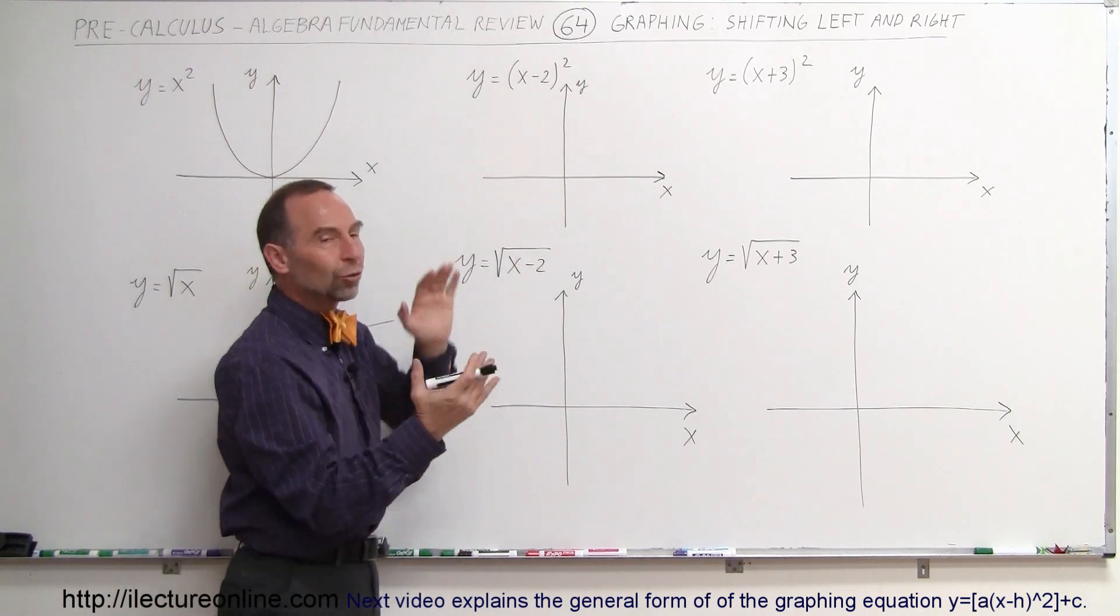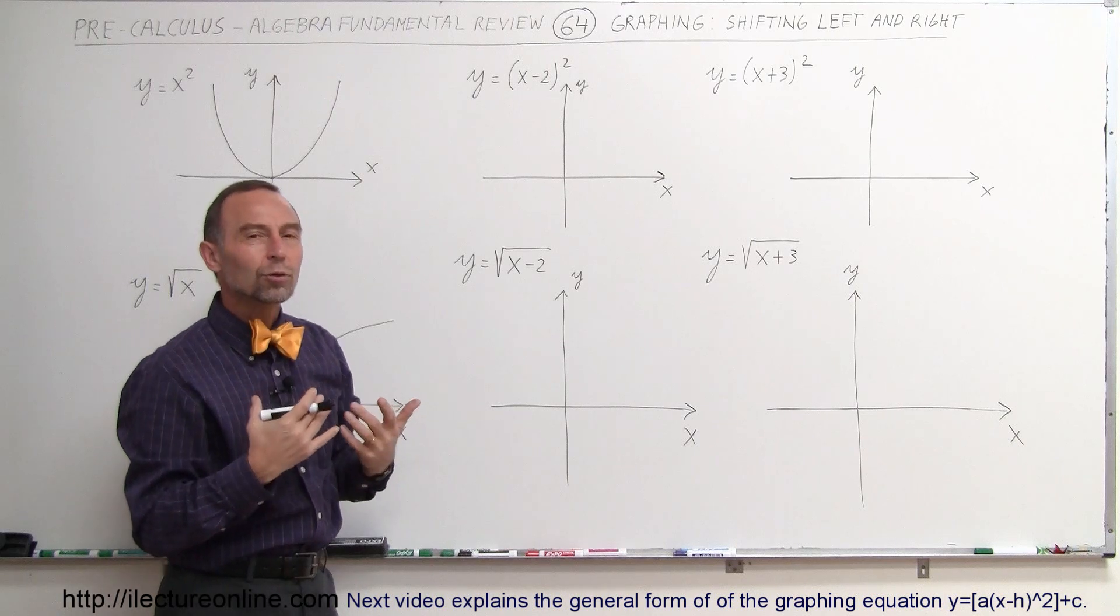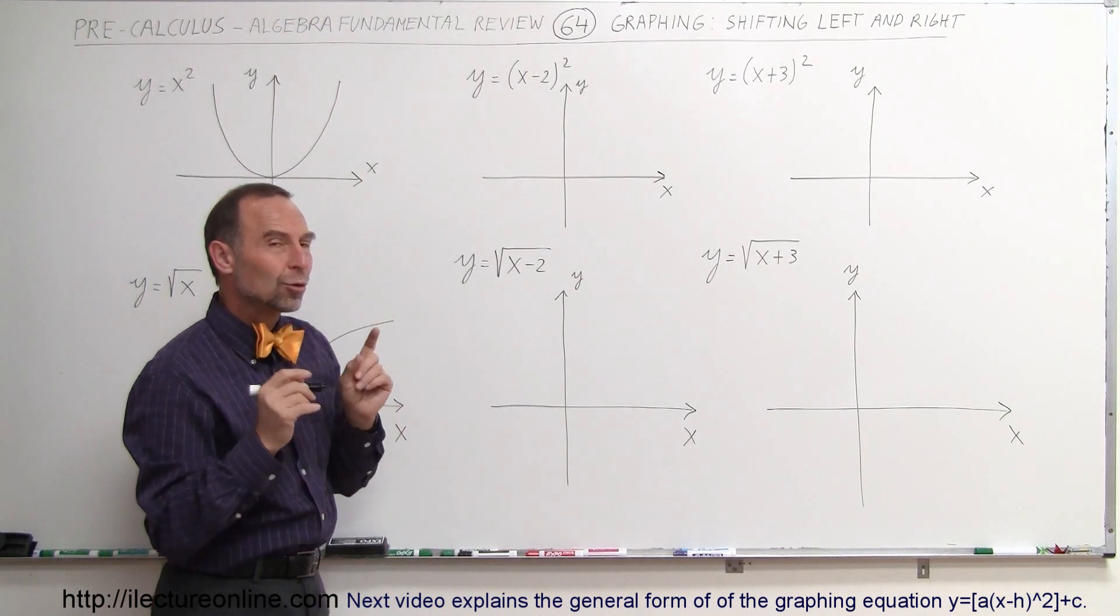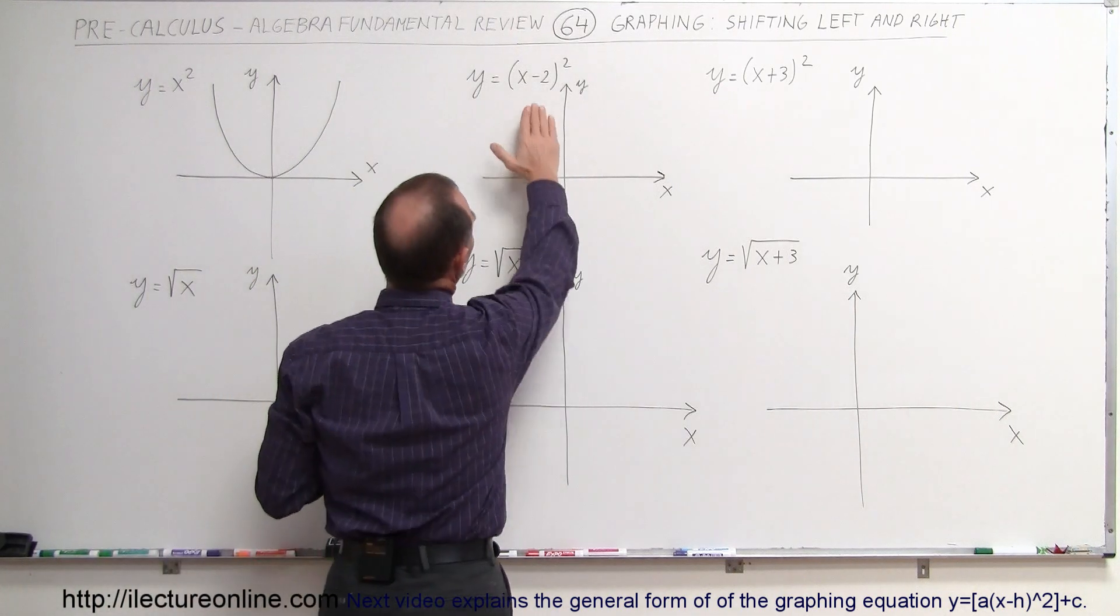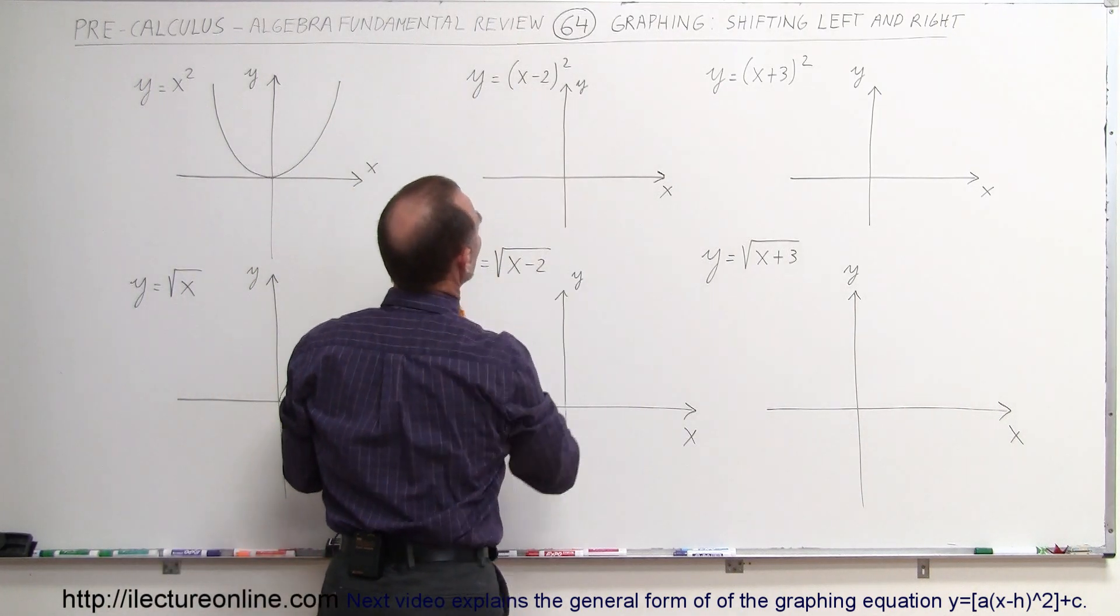If it's a plus, it's going to be shifted to the left. So it's kind of counterintuitive, but that's what happens. If you want to check that, you can go ahead and try some values and see what happens. So at least this means that it's going to be shifted to the right two units.